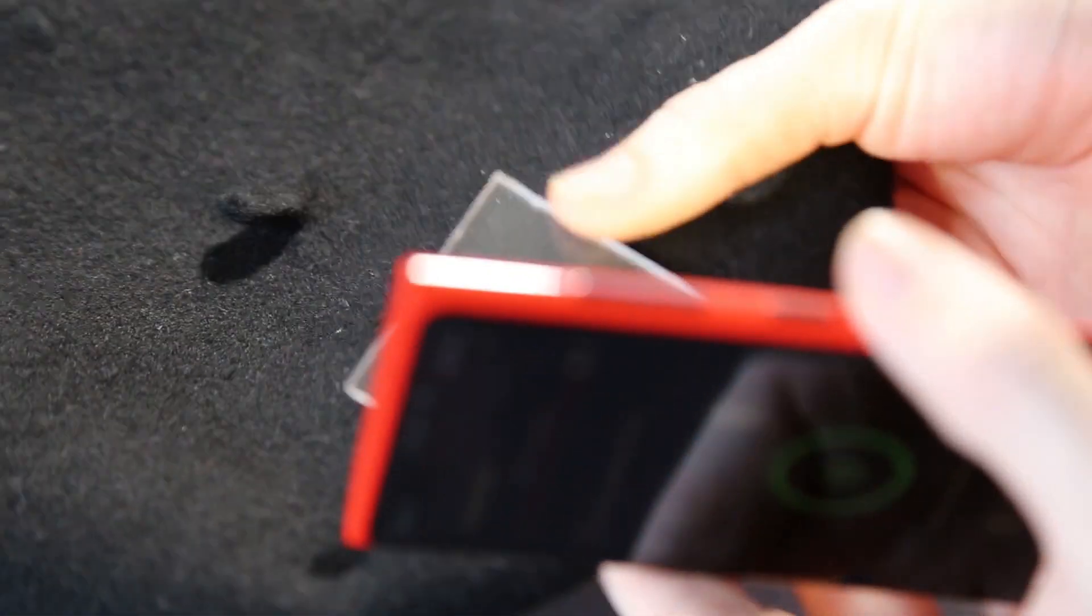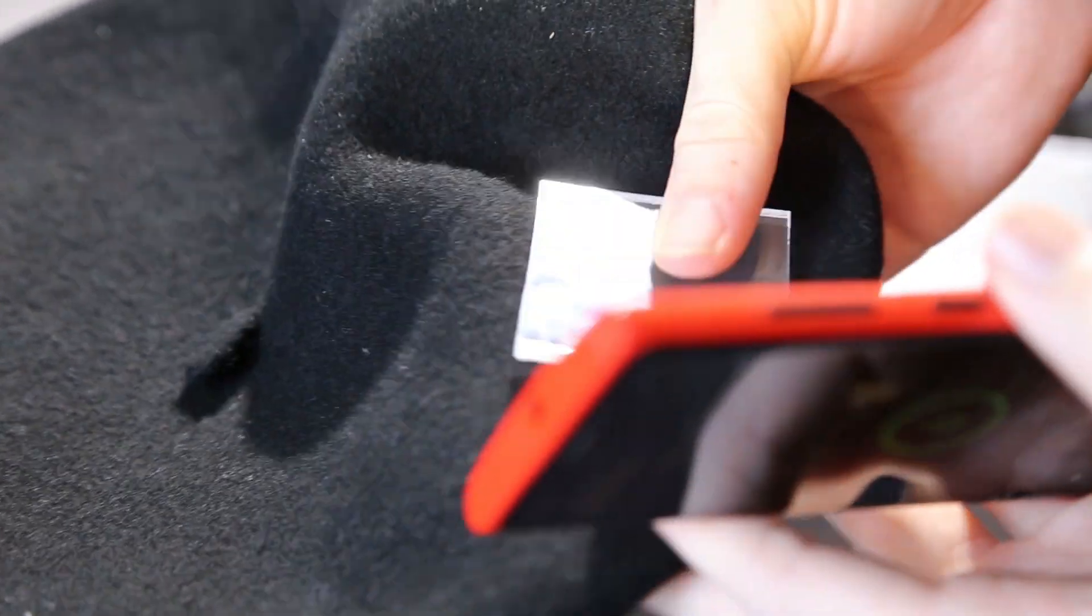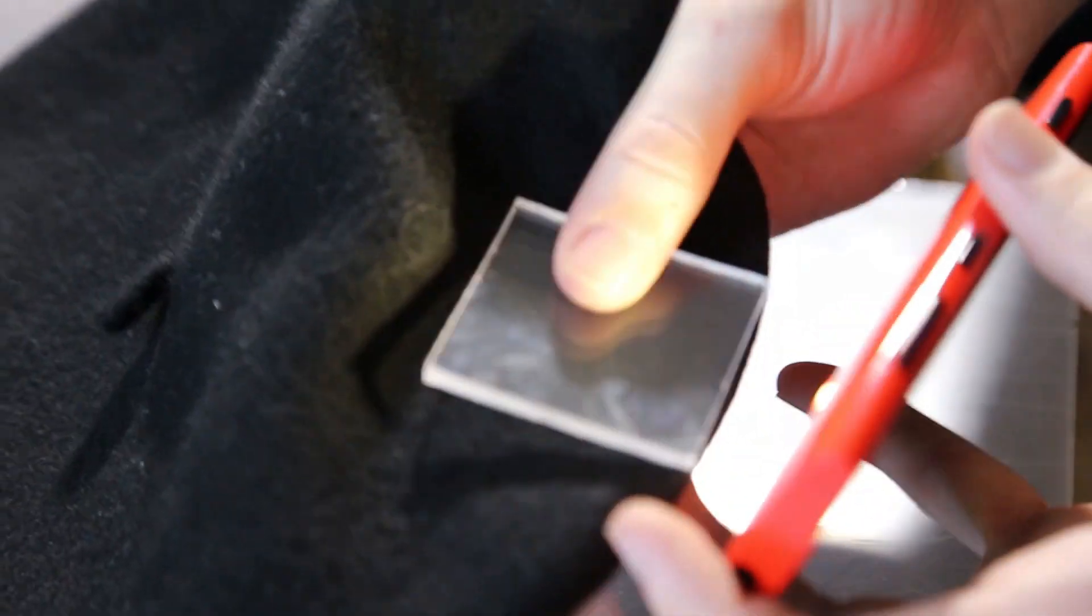So here, after experimenting with making the back more reflective, we're trying out what it looks like to have the back be as non-reflective as possible. We're grabbing some black fabric from a beret.